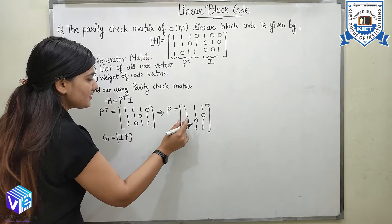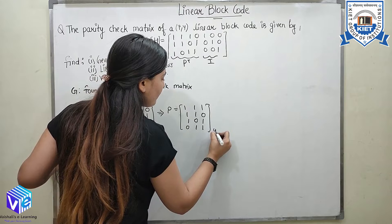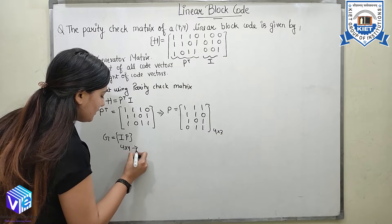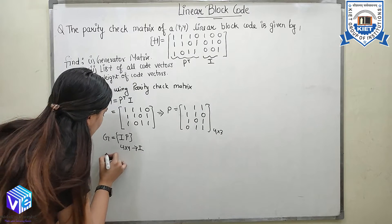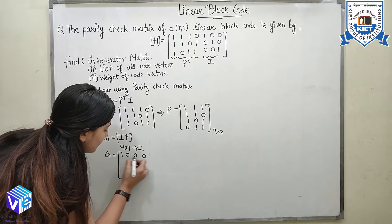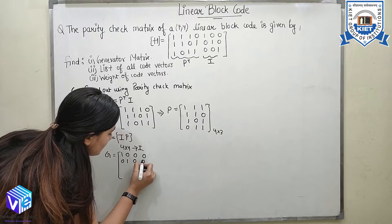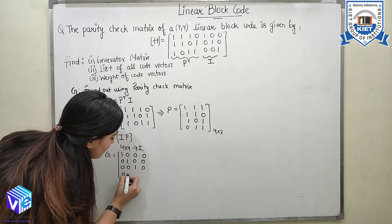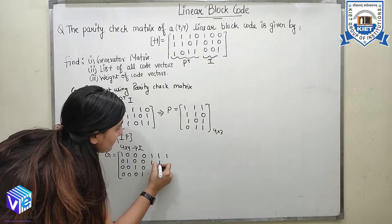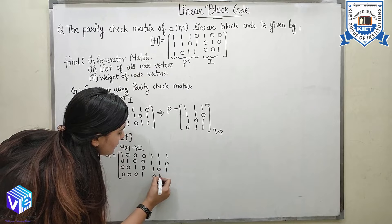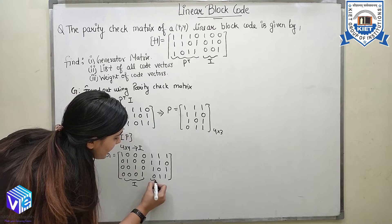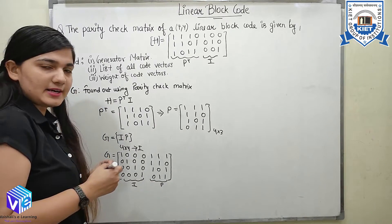Here P is of order 4×3, so the identity matrix I would be 4×4. The generator matrix is written as: the identity matrix of order 4 — [1 0 0 0; 0 1 0 0; 0 0 1 0; 0 0 0 1] — combined with P = [1 1 1; 1 0 1; 1 1 0; 1 1 1]. This is my generator matrix, where the left part is the identity matrix and the right part is the parity matrix.